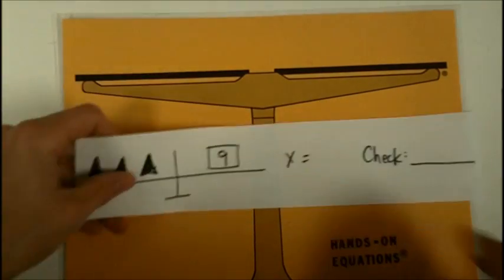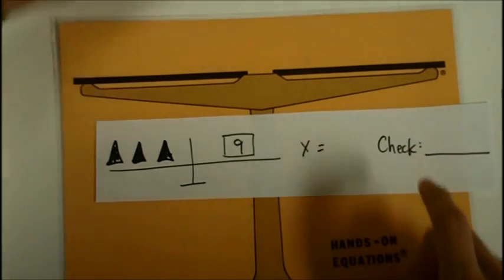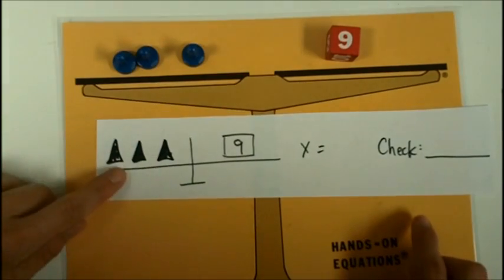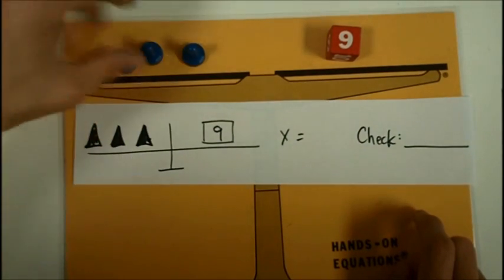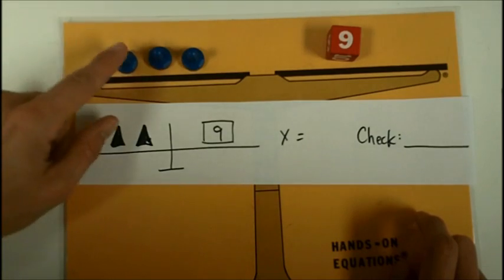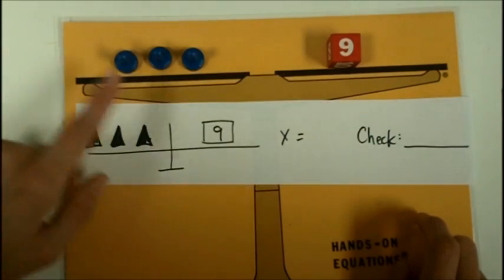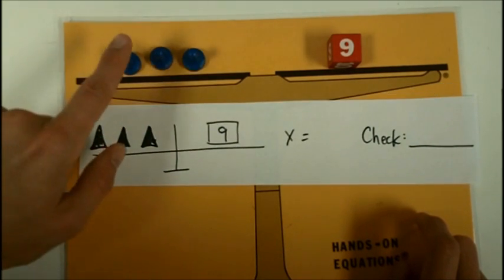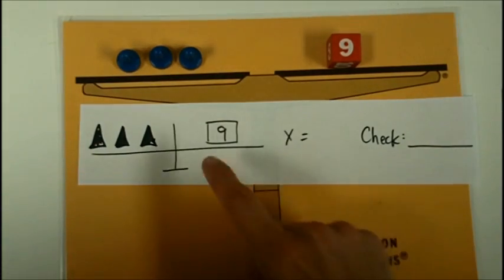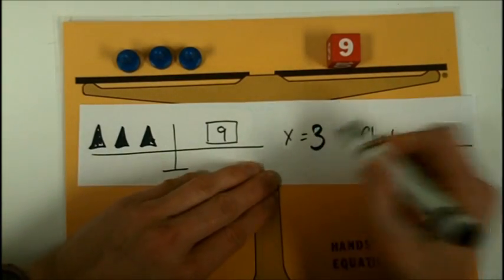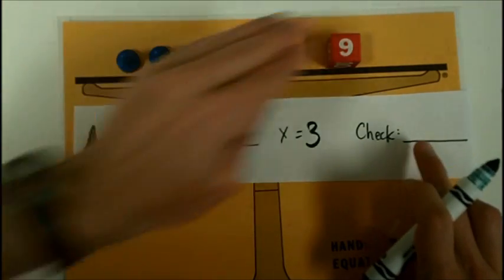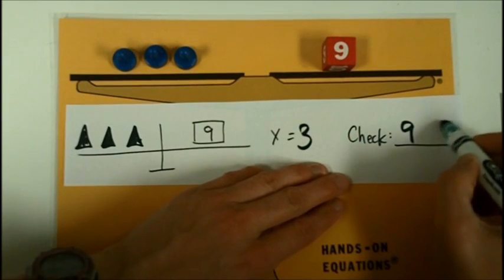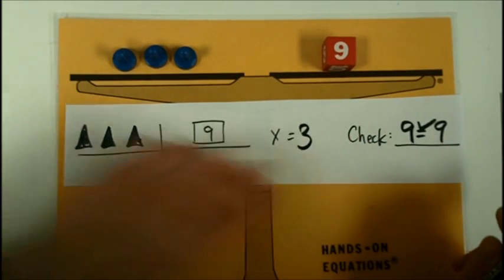For the first one, if you were given this problem on your worksheet, you would set up three pawns on the left and a 9 on the right. And then you would try to figure out, using guess and check, what the pawn would equal. So, 1 plus 1 plus 1, that would be 3. That doesn't equal 9. 2, if I tried 2, 2, 4, 6. No, that's too small. Let's try 3. 3, 6, 9. That's it. The pawn must equal 3. And then I check it by saying what this side is worth and what this side is worth. 3, 6, 9. This side is worth 9. And then I put an equals and a check because it worked.